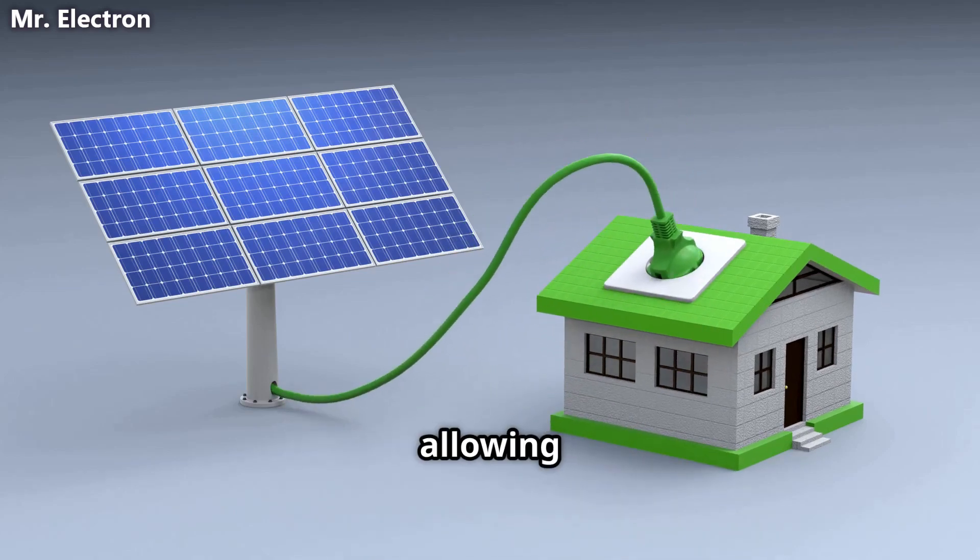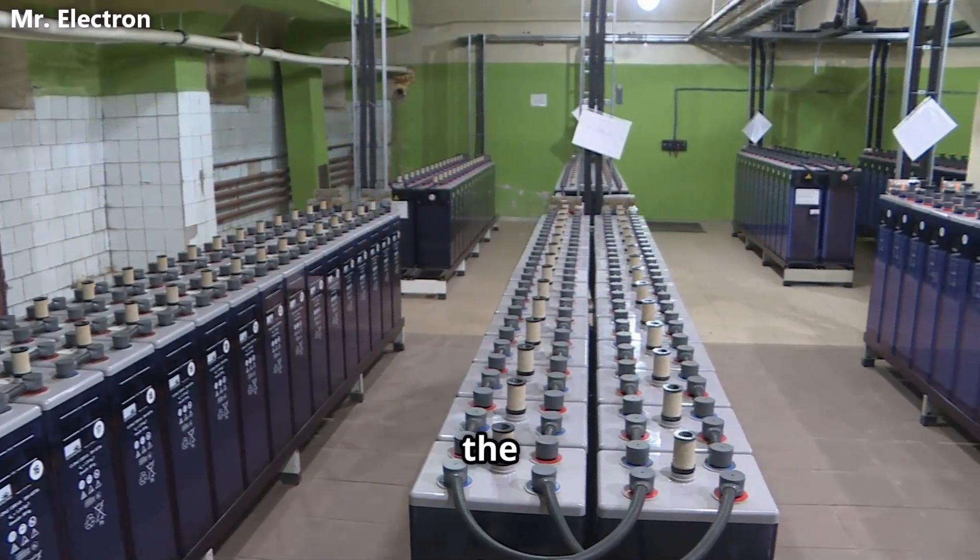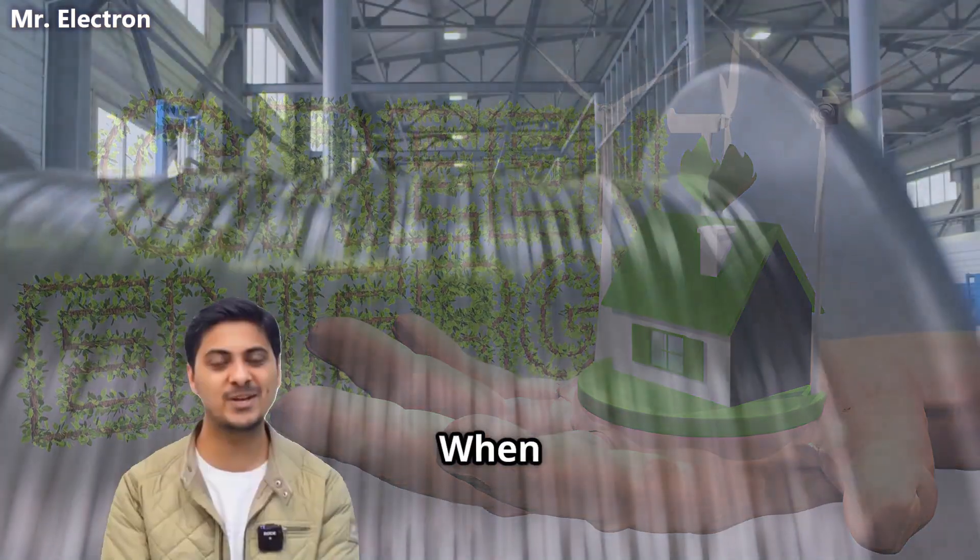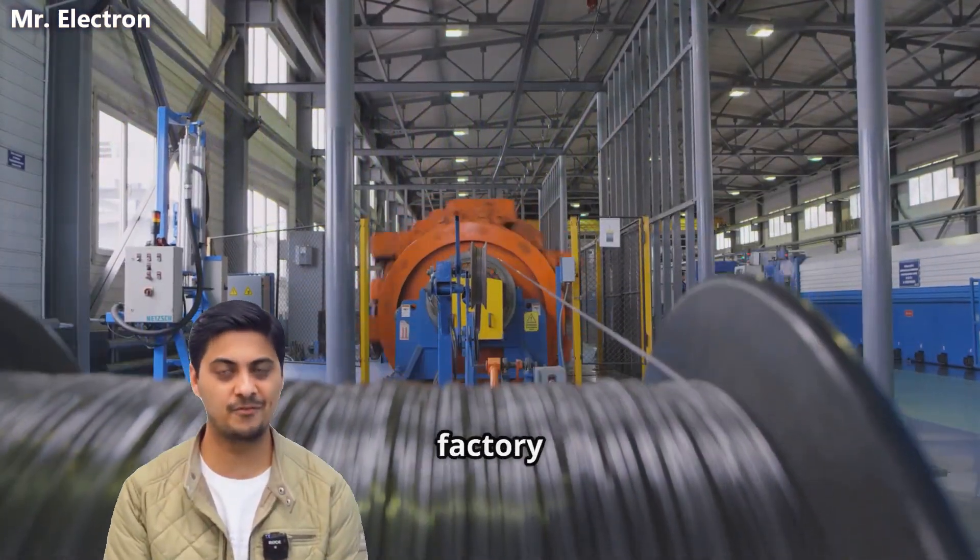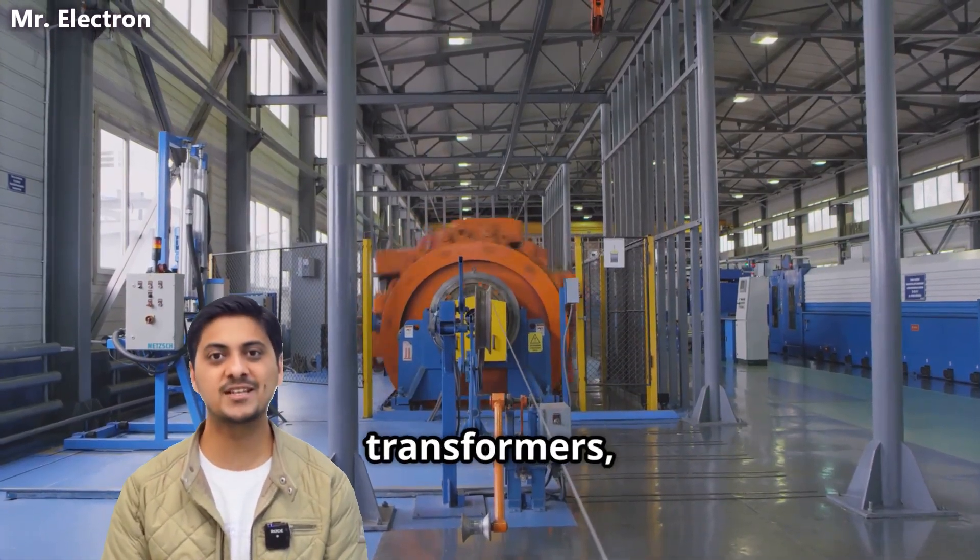During summer months when solar panels perform optimally, lightning activity tends to be moderate, allowing solar systems to carry the primary generation load. This natural balance eliminates the need for expensive battery storage to handle seasonal variations in renewable energy production.